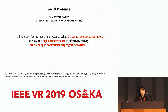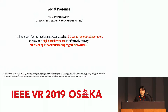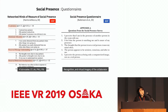Based on previous research, we set social presence as a key measurement because it is defined as the sense of being together with another. Social presence is afforded by the medium and measures the perception of others with whom one is interacting, according to Biocca and Harms' definition. Thus, it is important for the mediating system to provide high social presence to effectively convey the feeling of communicating together to users. These examples are widely used social presence surveys, and we used both of them as main measurements.